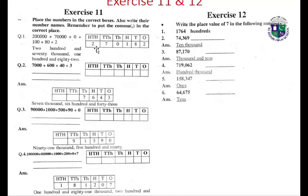210,000. 7 ten-thousands, 0 hundreds, 8 tens, and 2 ones — 270,182. 7,000 plus 600 plus 40 plus 3.